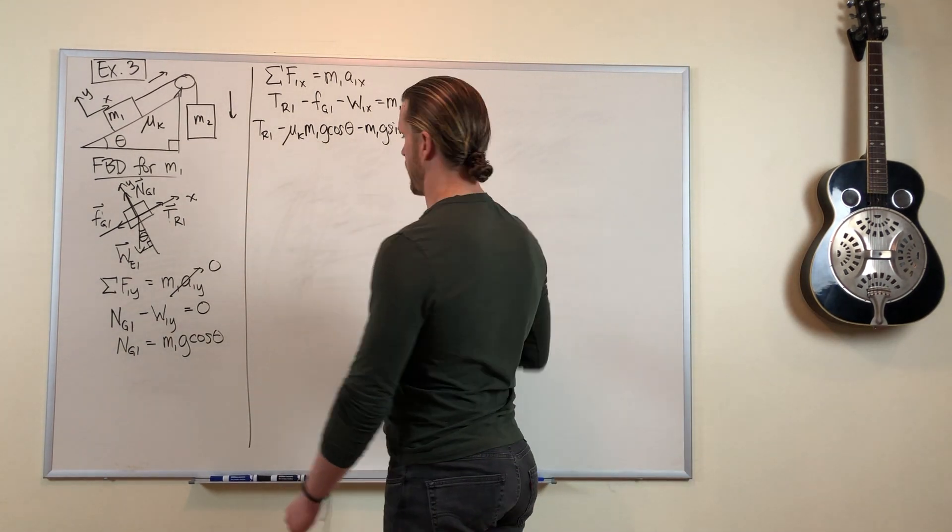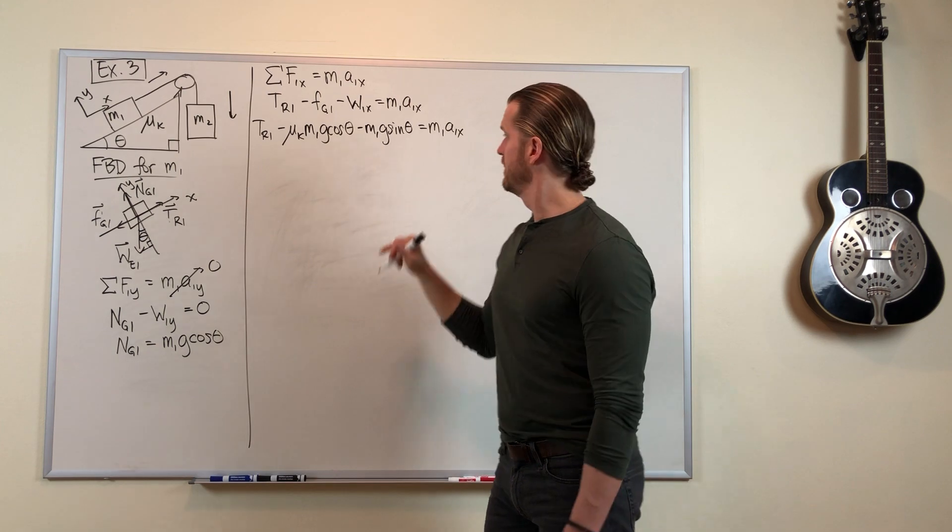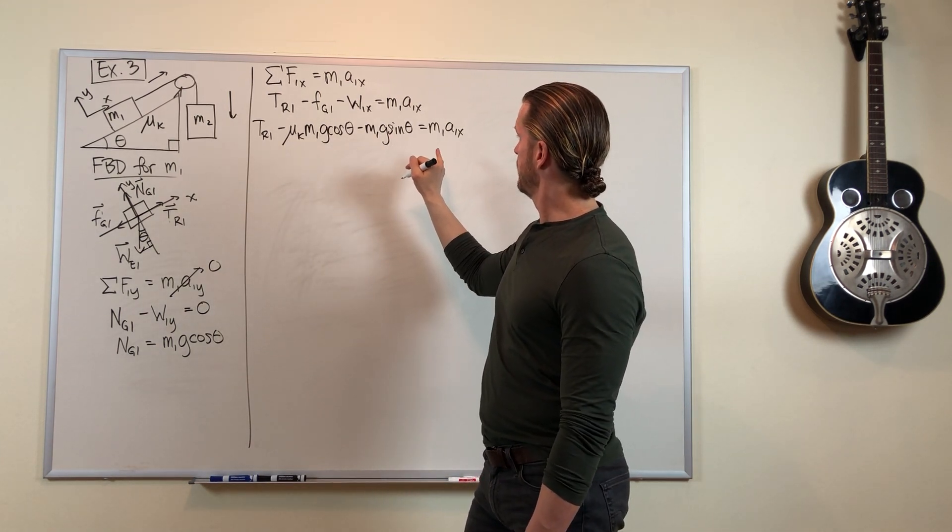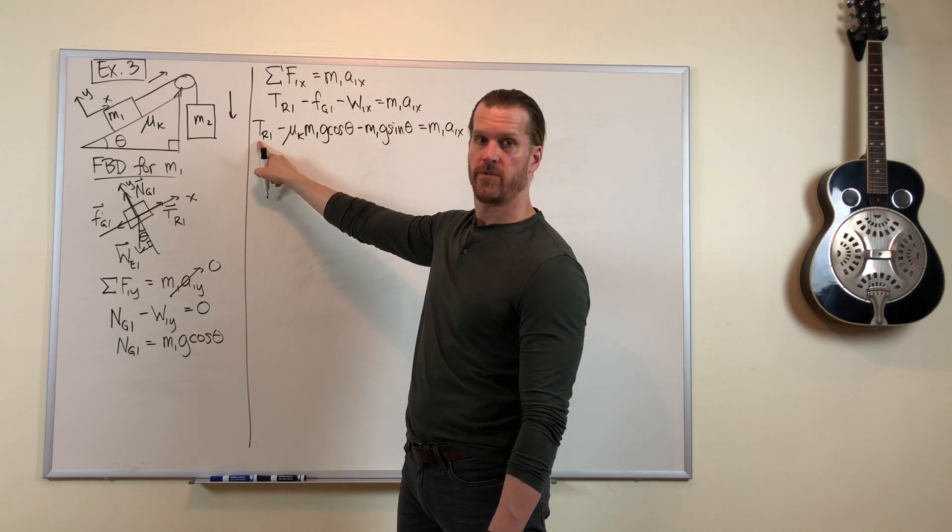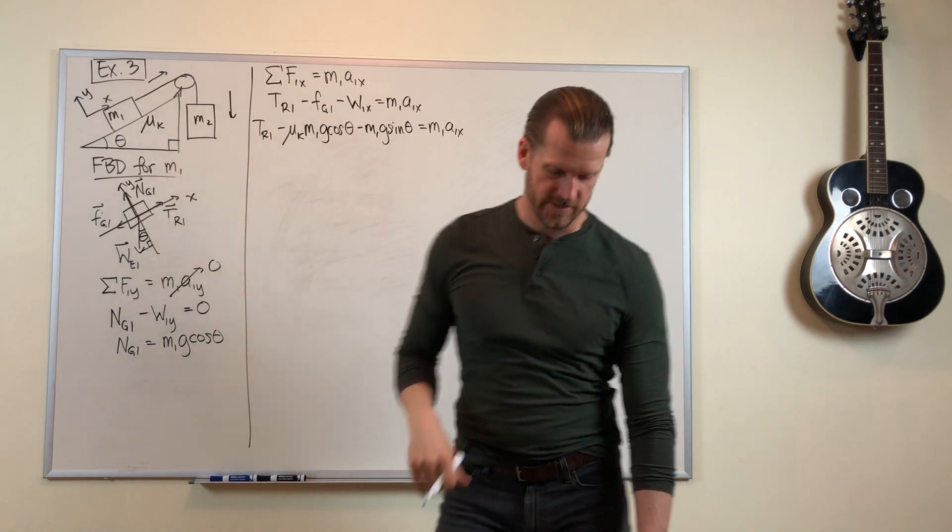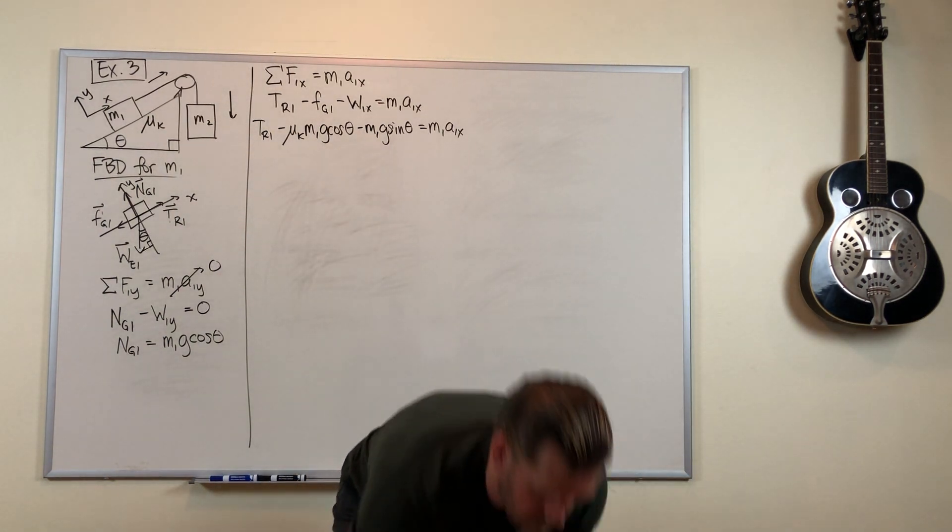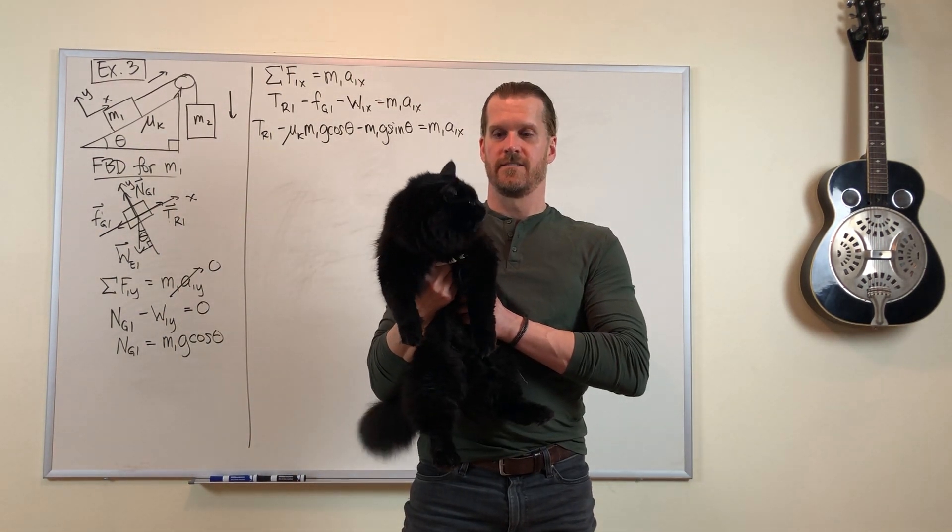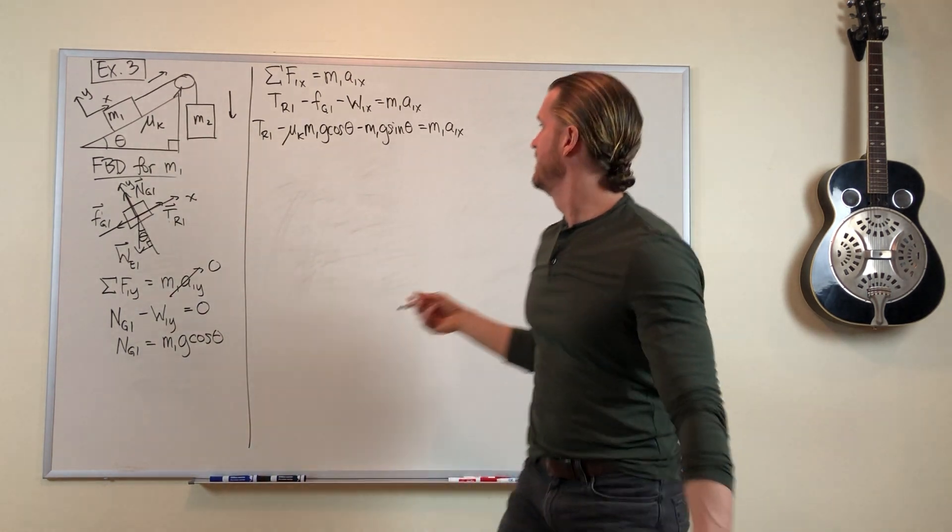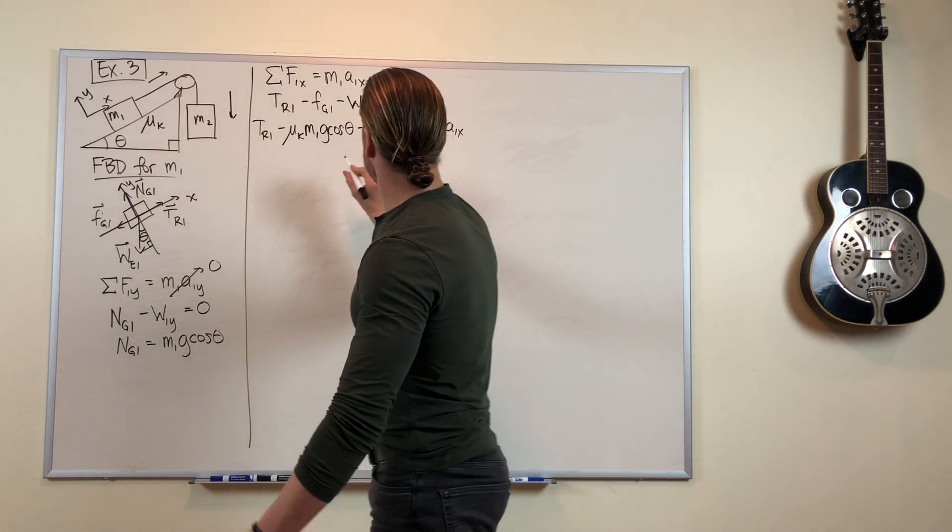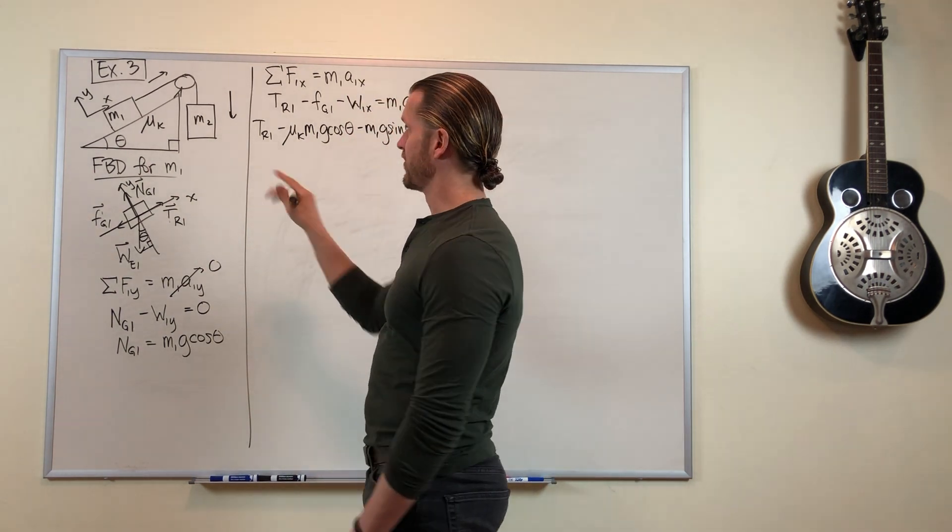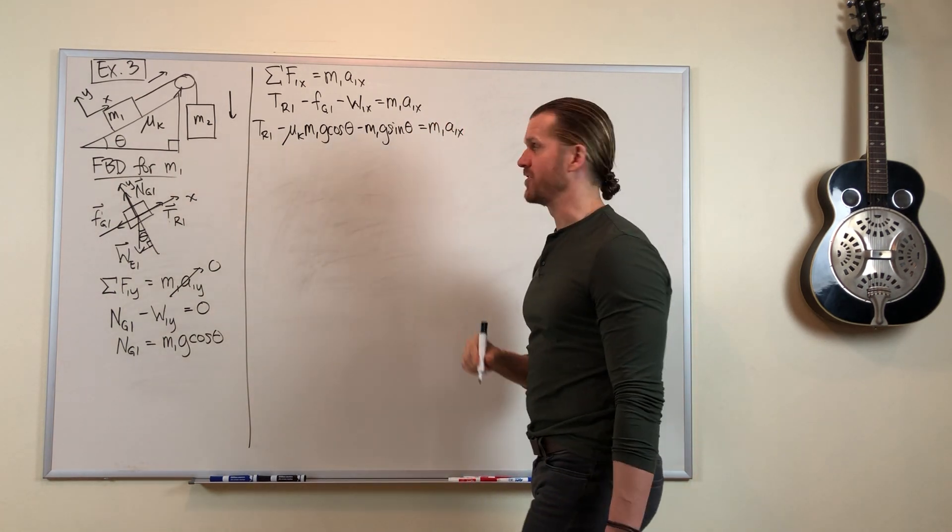Now we're stuck. We're stuck because we have one equation with two unknowns. We don't know this value of tension force, we don't know the value of the acceleration. There's the cat. So we'll pause there, we'll look at mass 2, and then see what we can do.